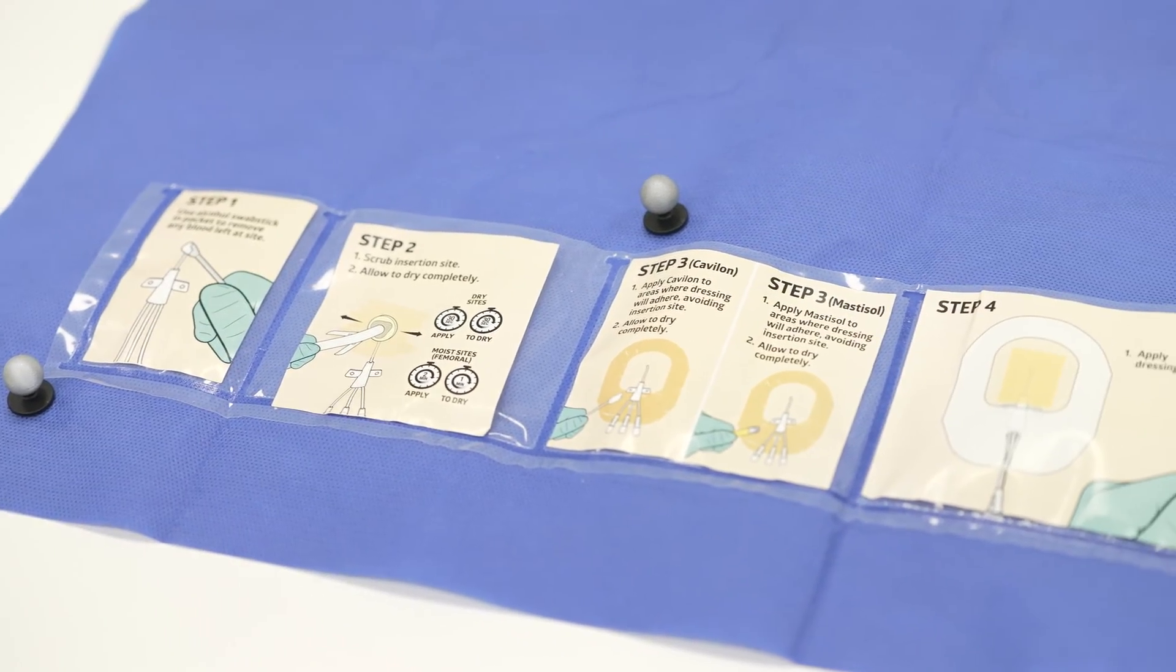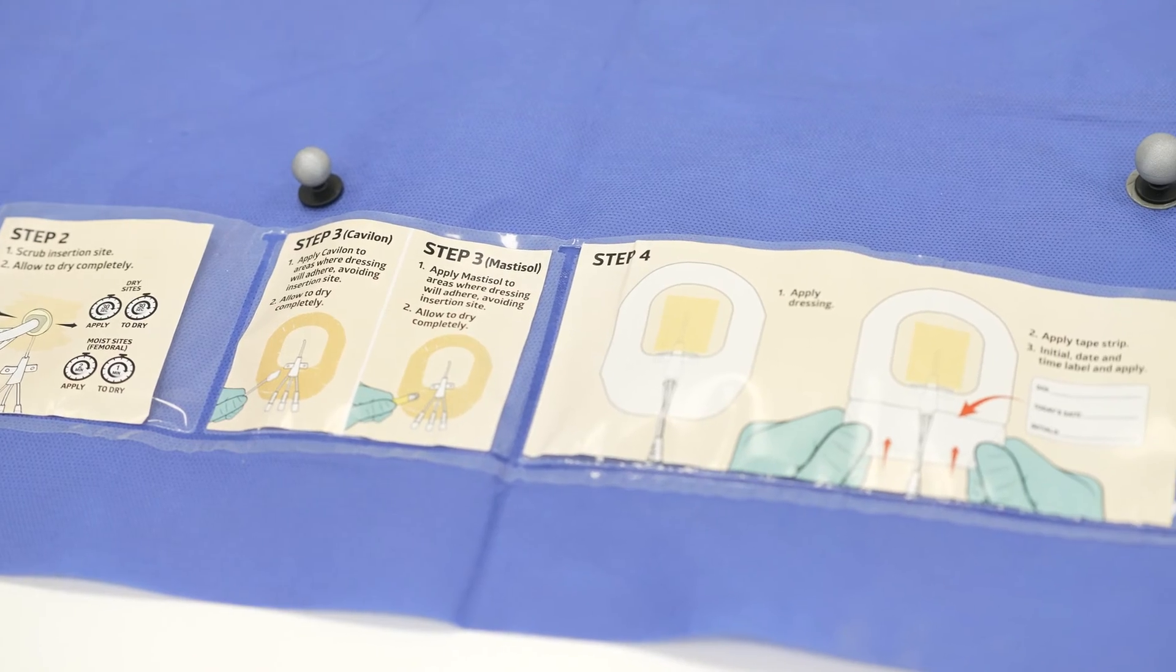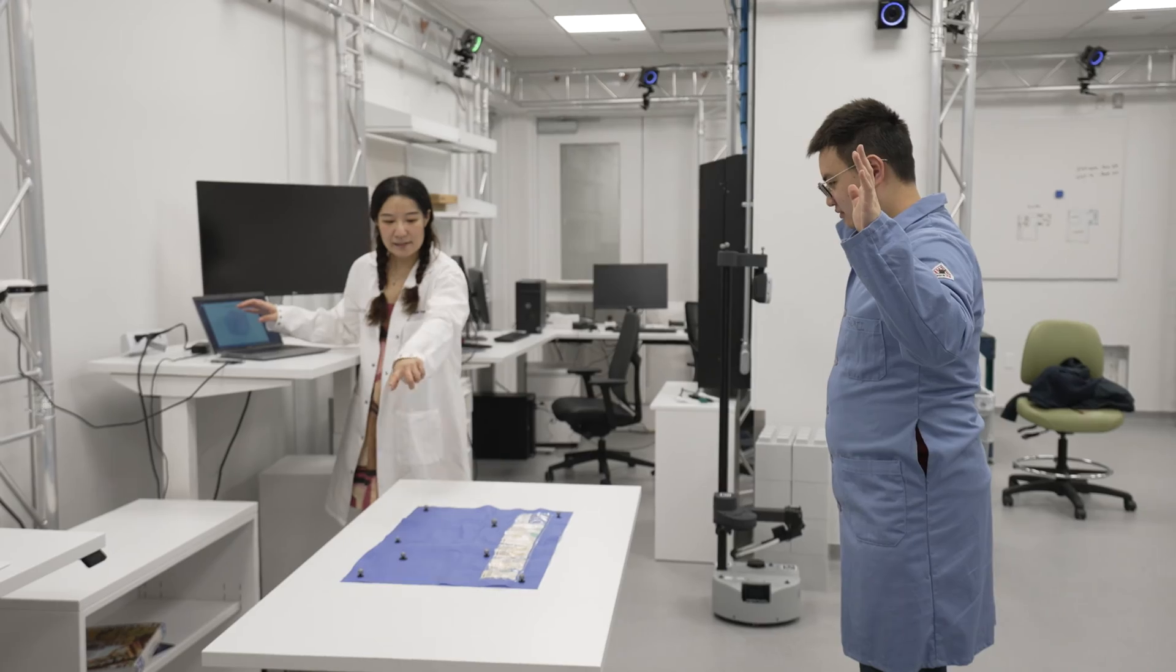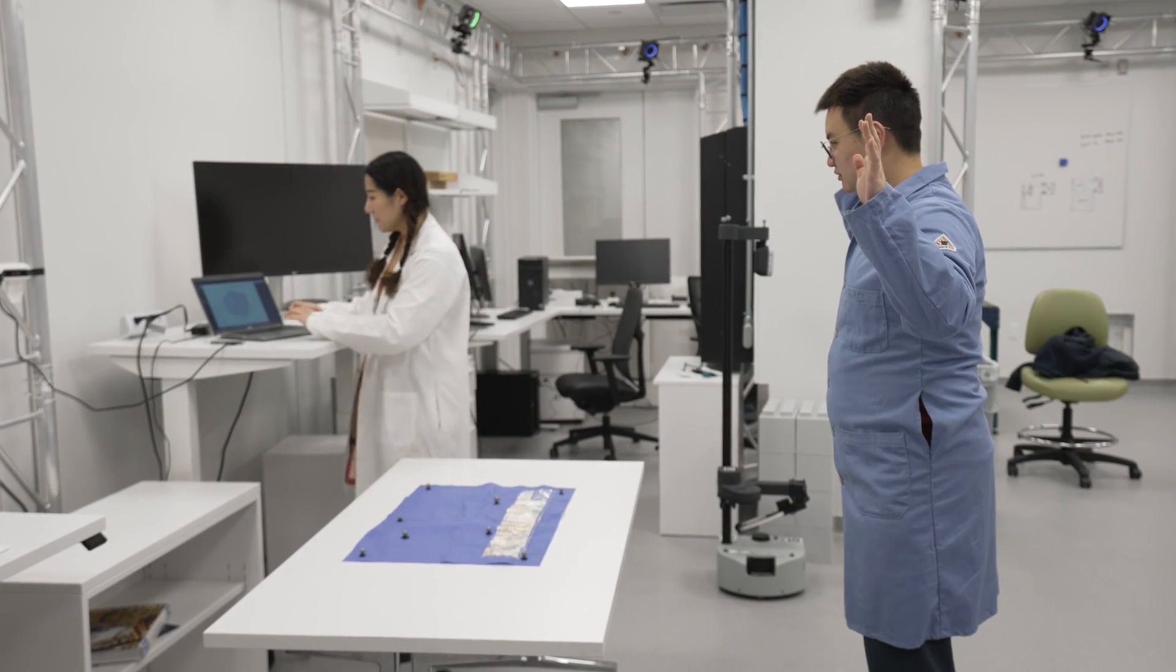We use this camera to track the motion of the nurse. What the nurse needs to do here is maintain a sterile field. This blue cloth is the sterile field, which means it cannot be contaminated, and this is a big part of many medical procedures in hospitals.